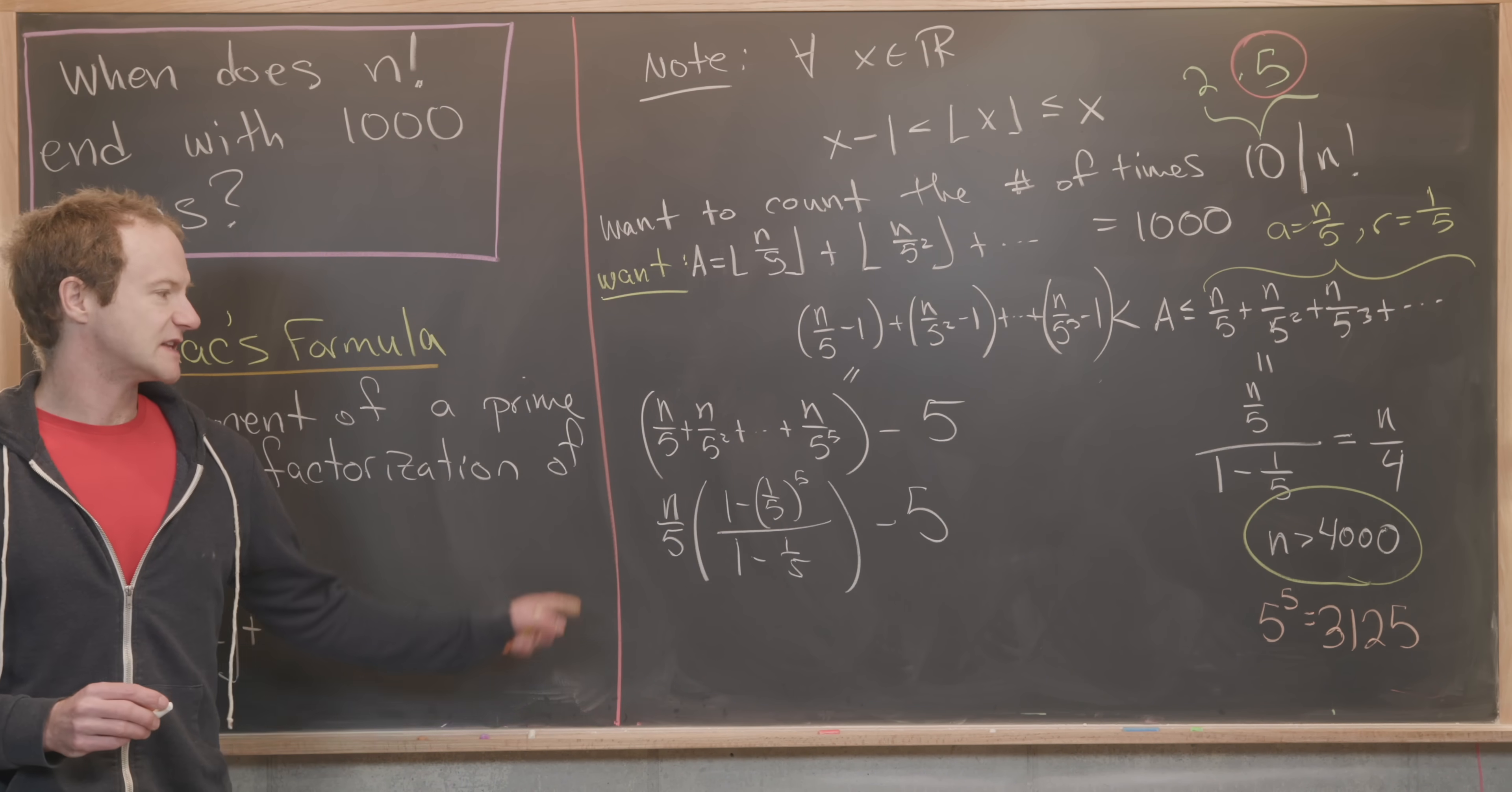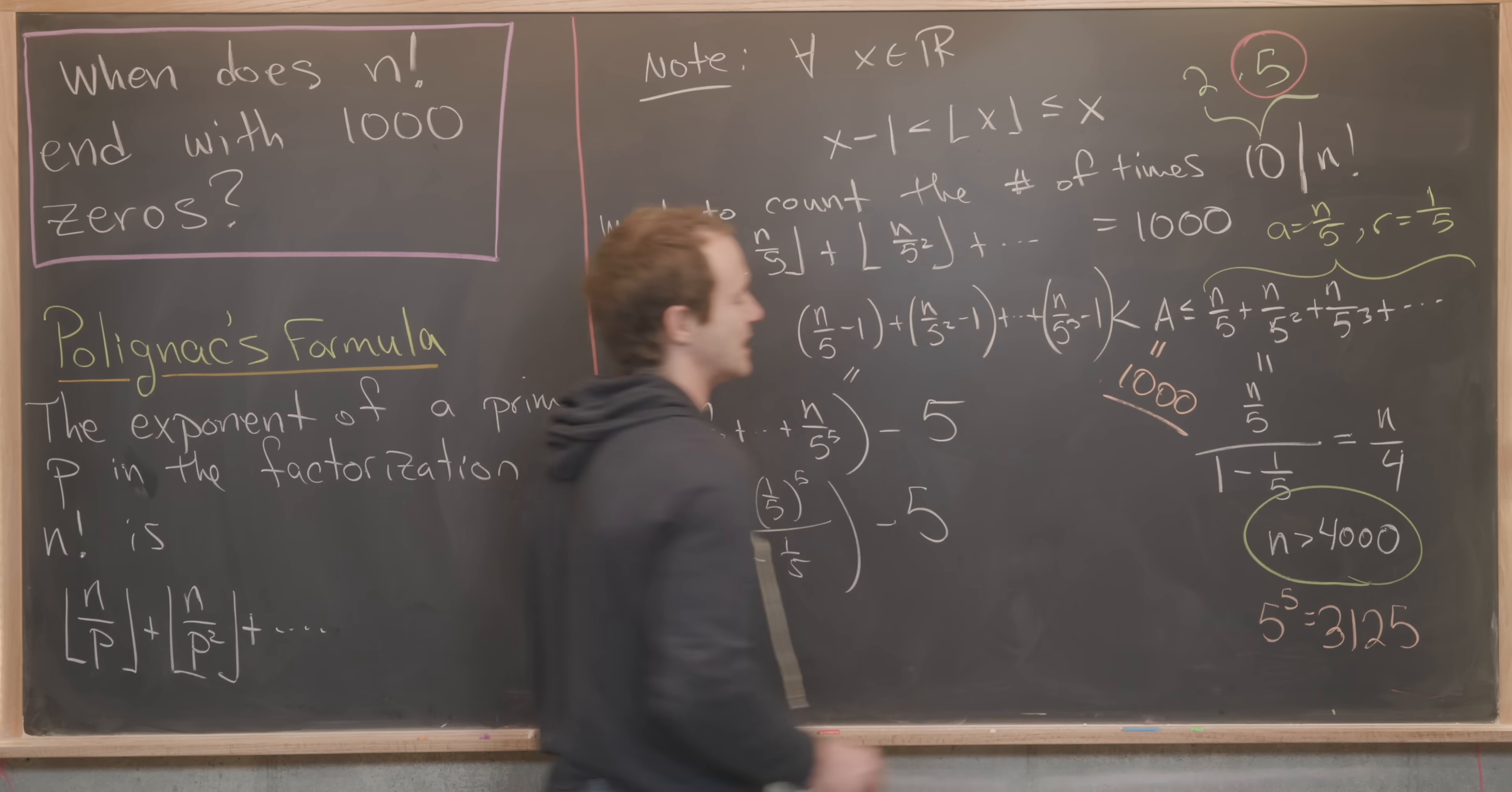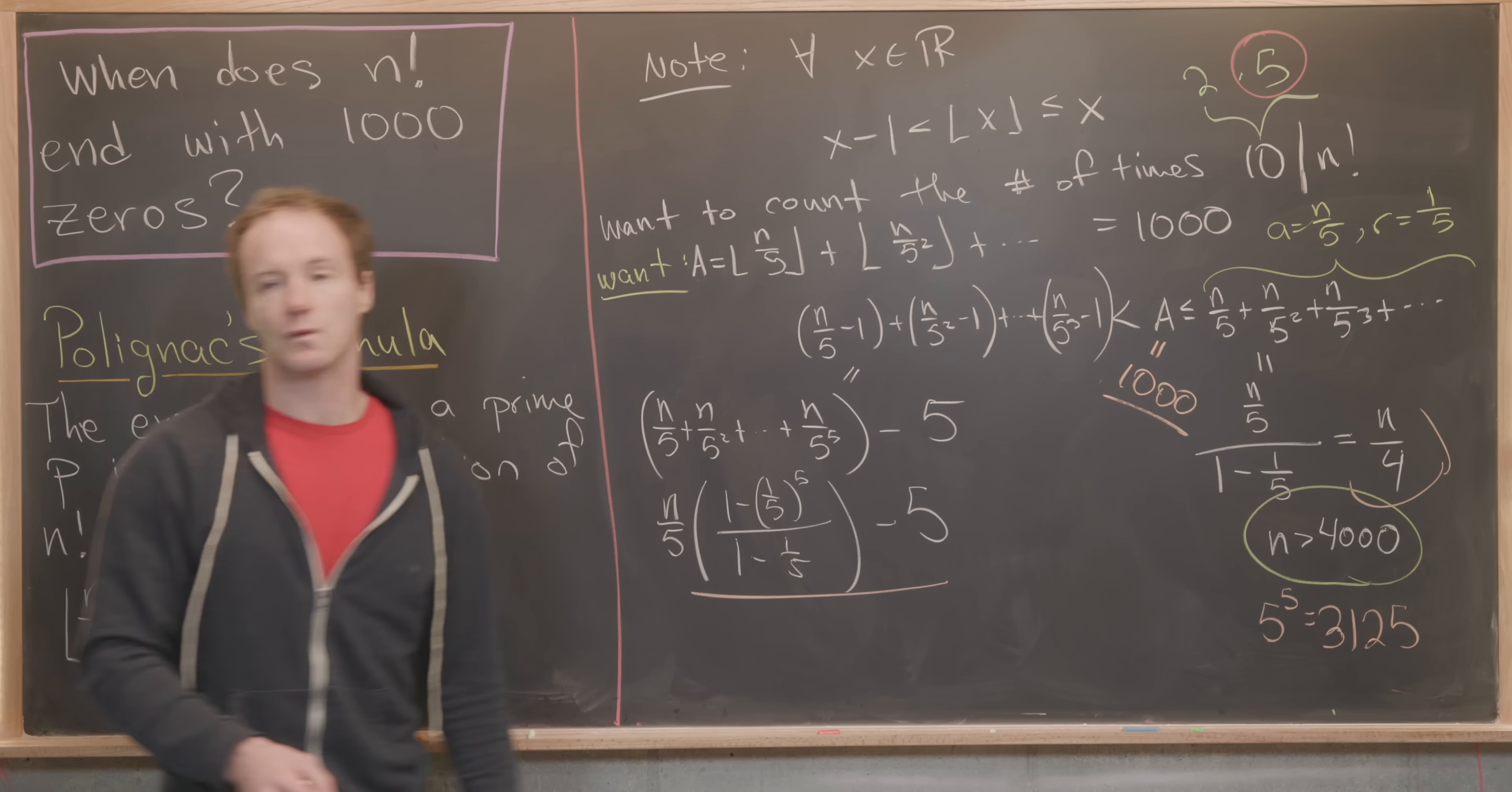We want this object A to be equal to 1000. In fact, we want to find n so that this object over here is less than 1000, and this object over here is bigger than 1000.